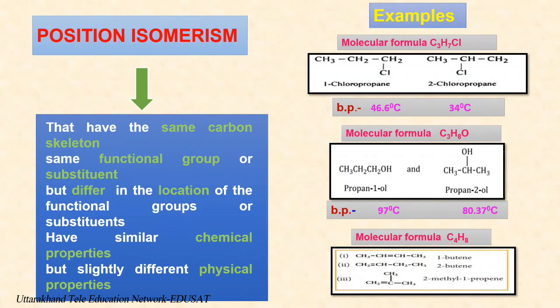Similarly, 1-propanol and 2-propanol are positional isomers with the molecular formula C3H8O. The functional group OH is at different positions on the main chain. 1-propanol, which is the straight chain isomer, has a higher boiling point than 2-propanol. And 1-butene, 2-butene, and 2-methyl-1-propanol are positional isomers with the molecular formula C4H8.